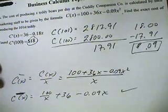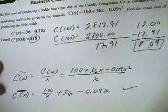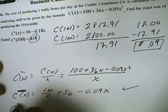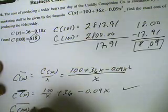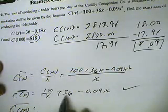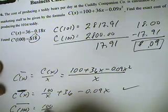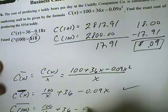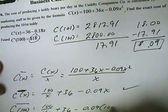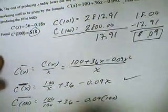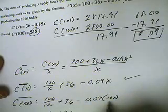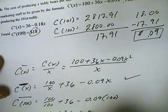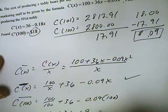Now that we have our average cost function, we want to look at what happens when we have 100 items. What will be the average cost of 100 items? Everywhere I see an x, we're going to put 100. So this will be 100 divided by 100 plus 36 minus 0.09 times 100. This is going to equal 1 plus 36, and this is going to go over twice, that will be plus 9. Looks like $46.